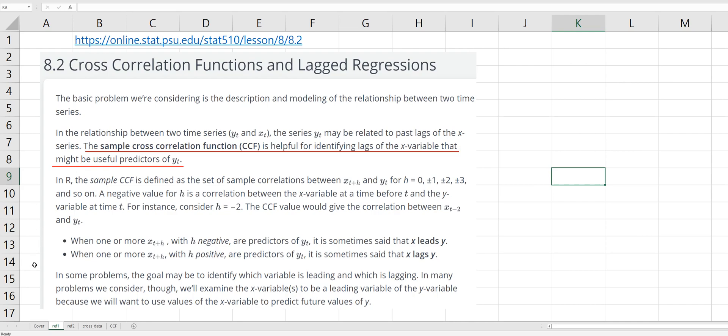There are two reference sites I have used. The first reference site explains the definition of cross-correlation. So, the sample cross-correlation function is helpful for identifying lags of the X variable that might be useful predictors of Yt.